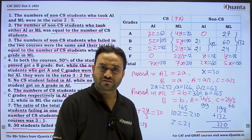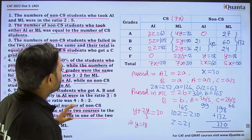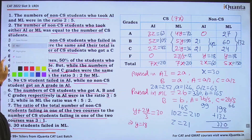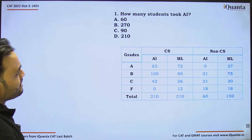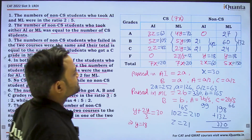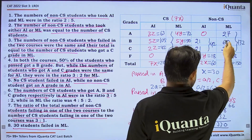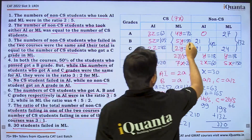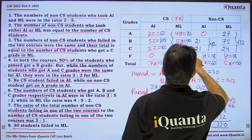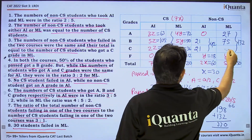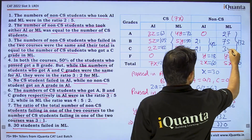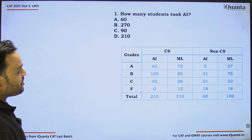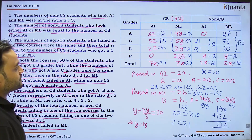Now we have all the values. This was not difficult to figure out — we just had to use all the information one by one. It's like a data entry problem, nothing else. After a small correction with the ML B-grade values confirmed as 90 and 75, all values check out. Now we can solve the questions.